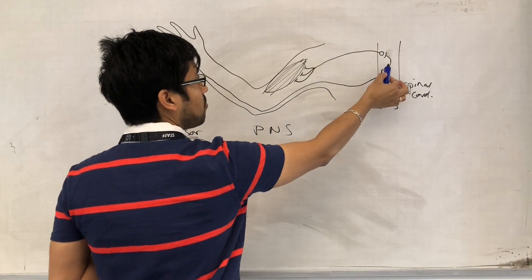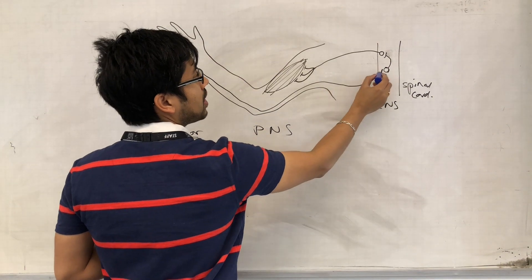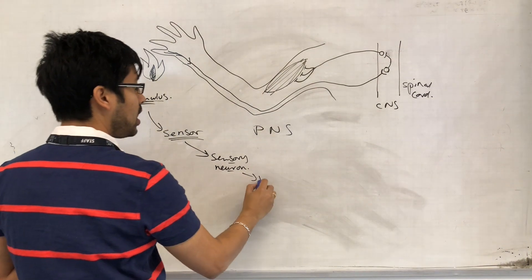Central nervous system, then the relay neuron. The impulse then passes and results in an impulse generated in the relay neuron.